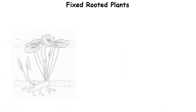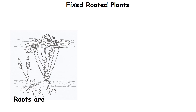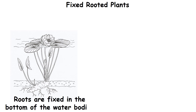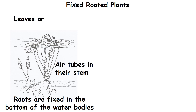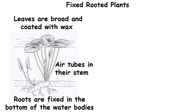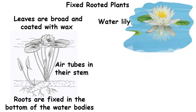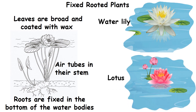Fixed-rooted plants. These plants have roots that are fixed in the bottom of the water bodies. These plants have air tubes in their stem that help them float. Their leaves are broad and coated with wax to make them waterproof. Example: water lily and lotus.